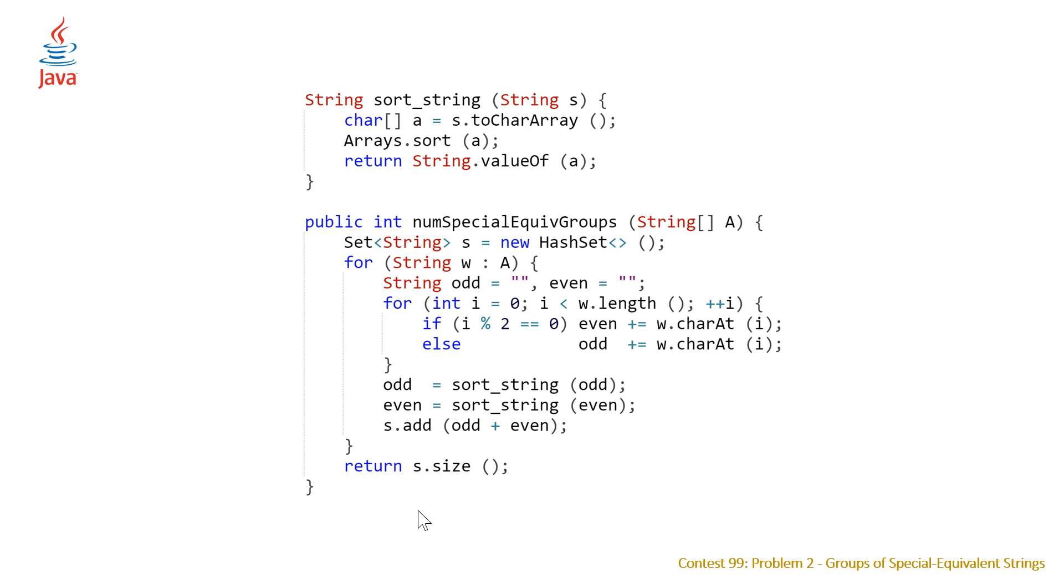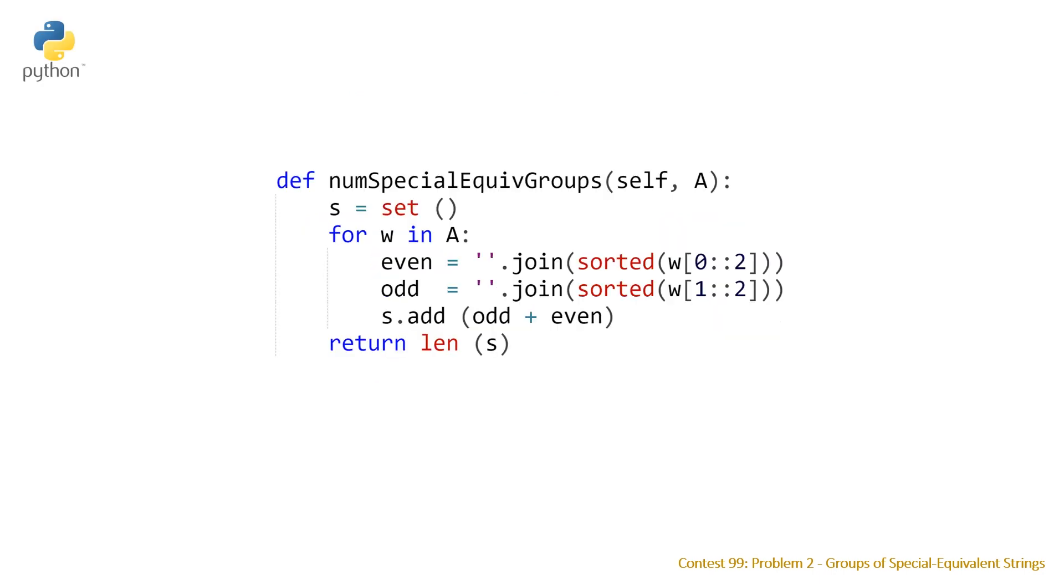Once again moving on to the Python solution, the most concise of all as usual. We declare our set at the top and then we enter a for loop where we can automatically construct our two substrings by using this nice syntax here that basically means starting at index 0 and then skipping by 2, and starting at index 1 and skipping by 2. Then we can sort this and then we can use the join method which will concatenate each of the elements in our data structure. Because it's empty we're just going to end up turning what was an array based on the sorted method and it's going to end up being a string. So once we've done that we just can add them to our set and then return the length of this.